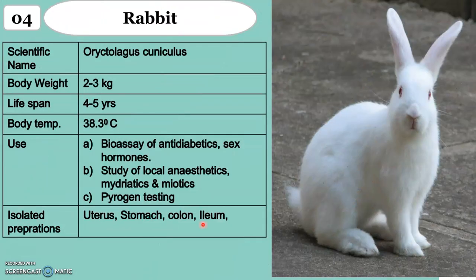Animal Number 4 is rabbit, scientifically known as Oryctolagus cuniculus. Body weight: 2 to 3 kg. Lifespan: about 4 to 5 years. Body temperature: 38.3 degrees Celsius. Rabbit is used for isolated preparations. Generally, it is used for pyrogen testing, local anaesthetic studies, as well as mydriatic and miotic effects.